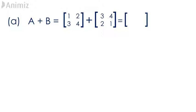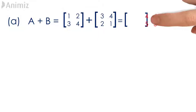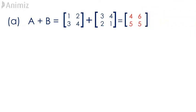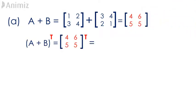This gives us a 2 by 2 matrix containing the elements 4, 6, 5, 5. This outcome is then transposed by interchanging its rows and columns to obtain A plus B transpose, which gives us the matrix 4, 5, 6, 5.